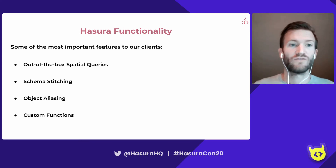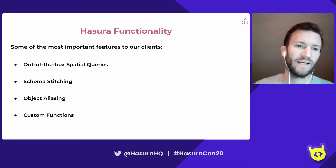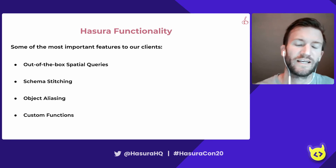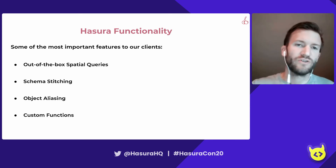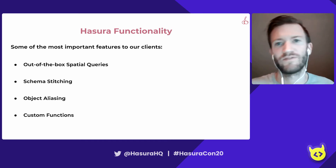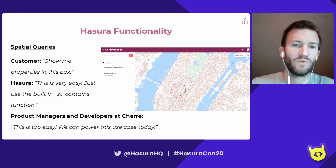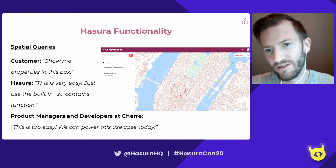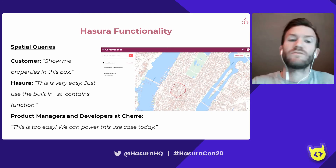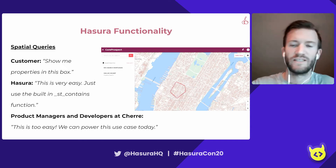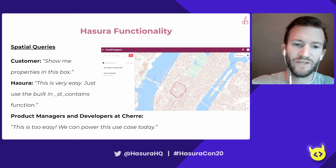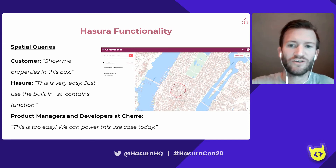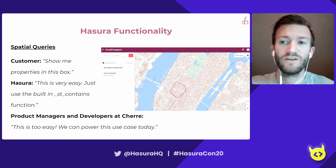Some of the Azure functionality that's really important to us and our clients: out-of-the-box spatial queries, schema stitching, object aliasing, and custom functions. With GraphQL already helping to solve some of those issues we would have had with REST, this is the out-of-the-box functionality from Azure that really helps us support our clients. When it comes to spatial queries, a customer might ask: show me all of the properties in this box — on the right side you can see I've drawn a little box on a map. The response from Azure is: just use the built-in contains function native to PostGIS. And our response is: that is awesome, too easy — we can power this use case today with hardly any work needed.